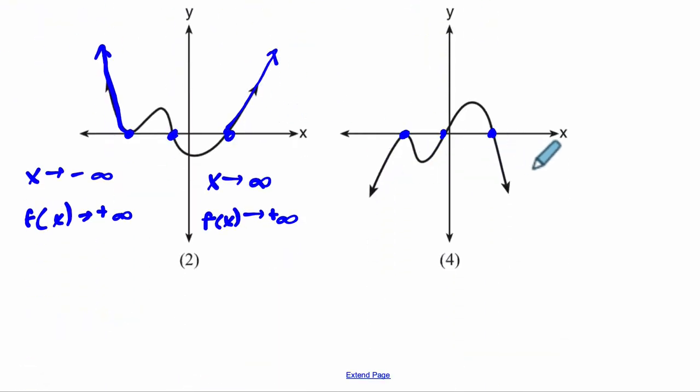And then the last one, as x approaches infinity, f(x) approaches negative infinity, which is not what we want. And as x approaches negative infinity, f(x) also approaches negative infinity. So I just wanted you to see what the, this is all about end behavior, if you want to look up more about that, of a polynomial.